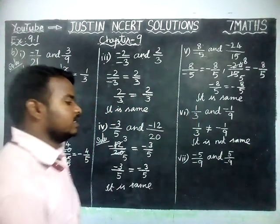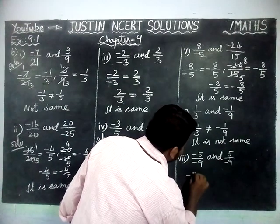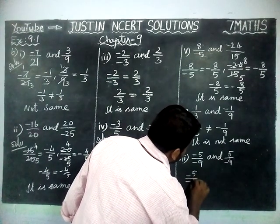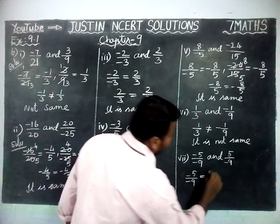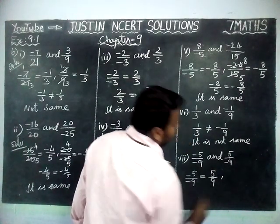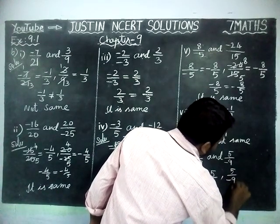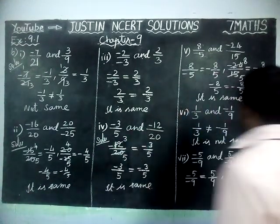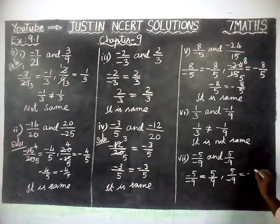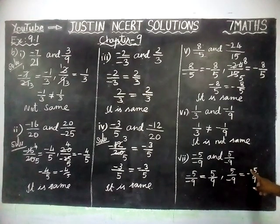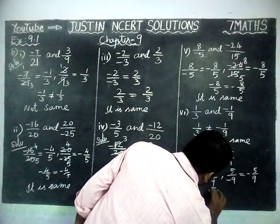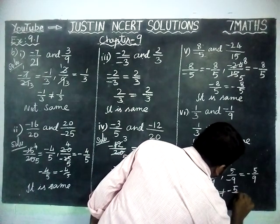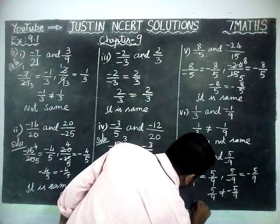Seventh pair: minus 5 by minus 9 — we cannot simplify, but we can change the sign. Since both have minus signs, minus divided by minus becomes plus, giving positive 5 by 9. The other number is 5 divided by minus 9, which equals minus 5 by 9. This is a positive number versus a negative number, so they are not equal — it is not the same.